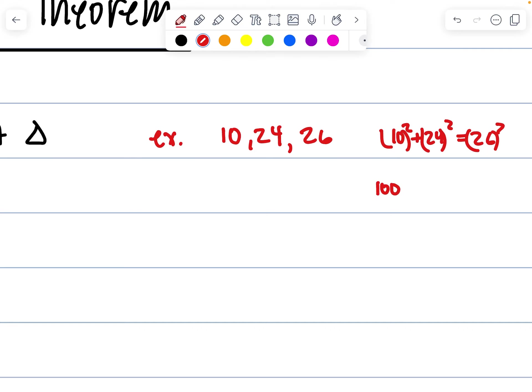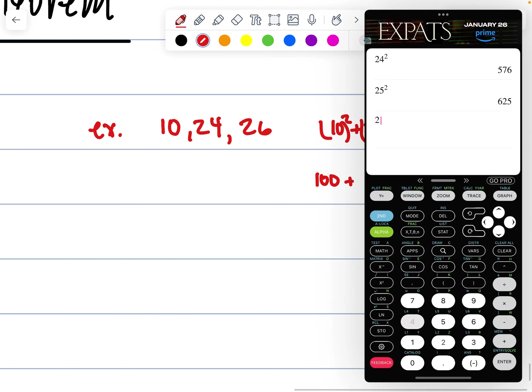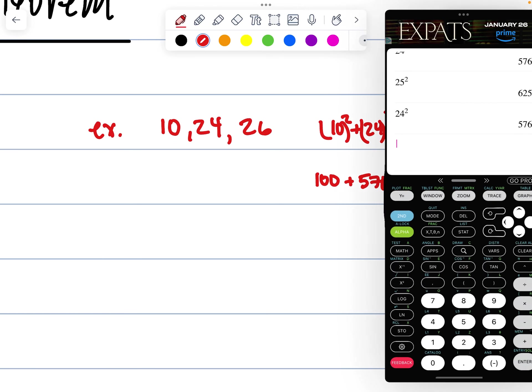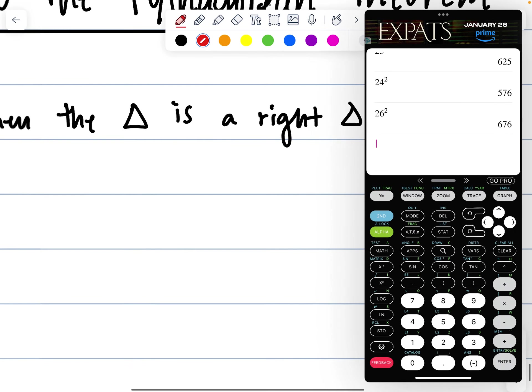10 squared is 100. 24 squared, I don't know off the top of my head. So let's just do it really quickly. 24 squared, 576. Actually, I should have known that. And then 26 squared, I definitely don't know off the top of my head. So 26 squared is equal to 676.